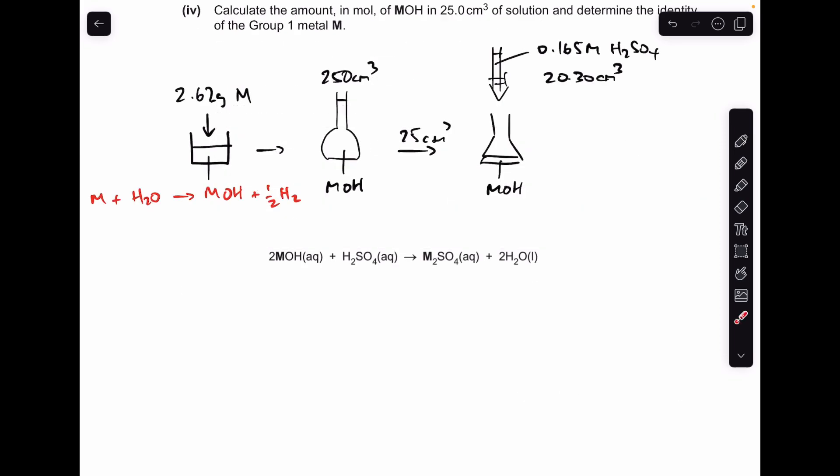So moving on to the actual titration calculation, I've done my usual thing and just sketched up the procedure. They've taken 2.62 grams of this metal—and remember it's in group one—and they've put it in water. You see in red there I've written up the reaction equation for that—that's really important when we get to the last part of the calculation.